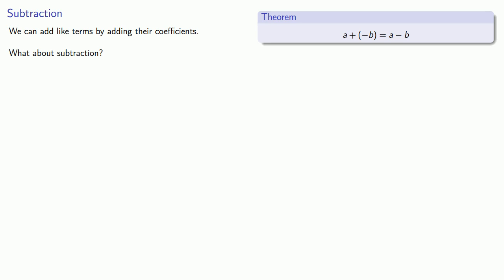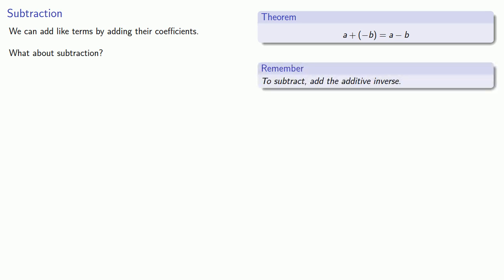We can remember the theorem that when we add the additive inverse, it's the same as subtracting — or equivalently, to subtract, we'll add the additive inverse. This is especially useful because addition is commutative and associative. It's better if we add the additive inverse than worry about what we mean by a subtraction.